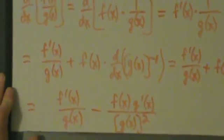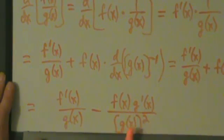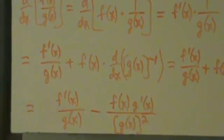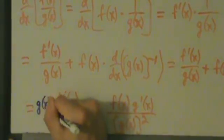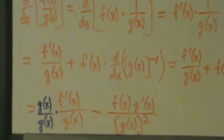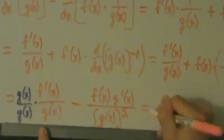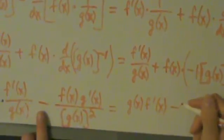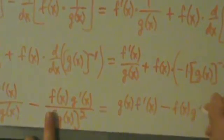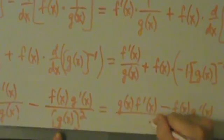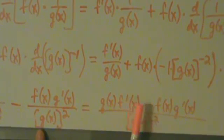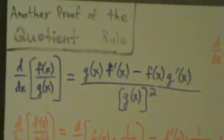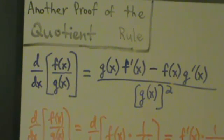We're not quite there yet — the first term has denominator g(x) while the second has g(x) squared. We multiply the first term top and bottom by g(x) to get a common denominator. Then we combine over one denominator: g(x)·f'(x) minus f(x)·g'(x), all divided by g(x) squared. That's exactly what we want — bottom times derivative of the top, minus the top times derivative of the bottom, over the bottom squared. That's another proof of the quotient rule using the product rule and chain rule.